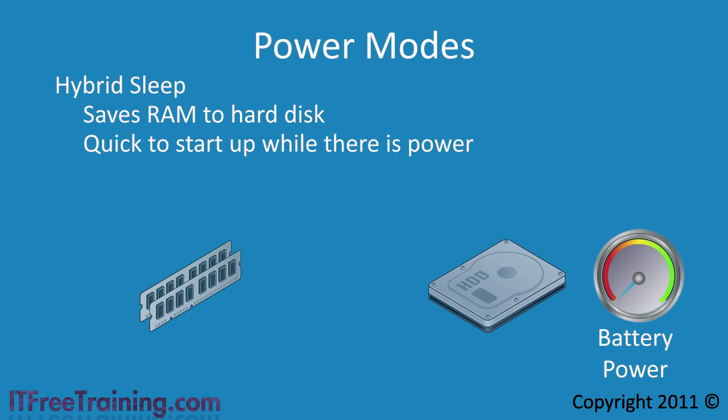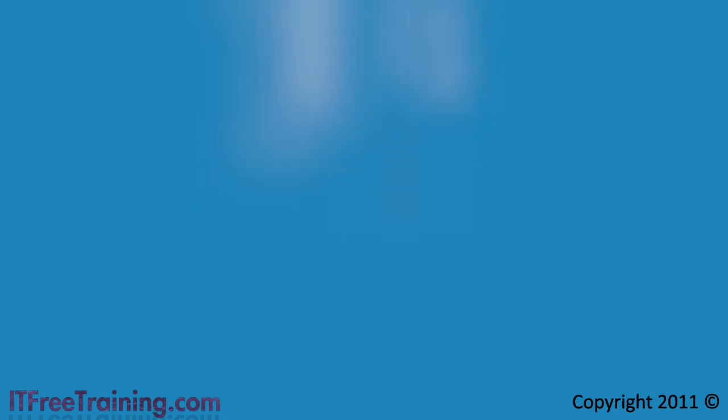Besides being able to put your computer to sleep, hibernation, or hybrid sleep mode, there are also other power options that can be applied to your computer to save power. For example, the hard disk can be spun down to save power. The screen can be dimmed or switched off to save power. To make configuration of these settings easier, Microsoft has pre-configured these settings into three different power plans.